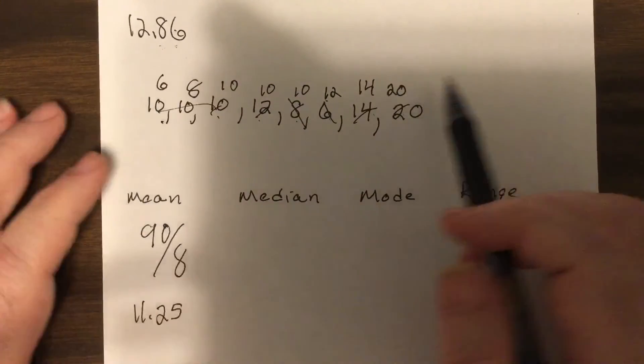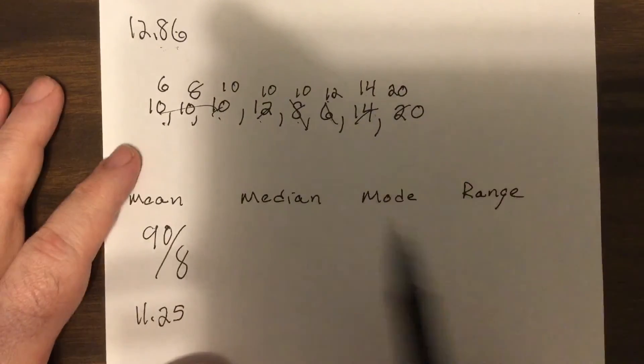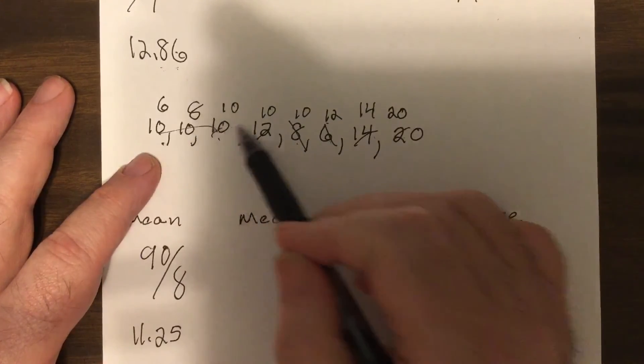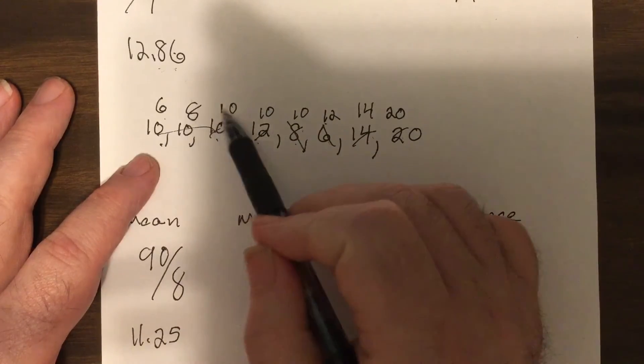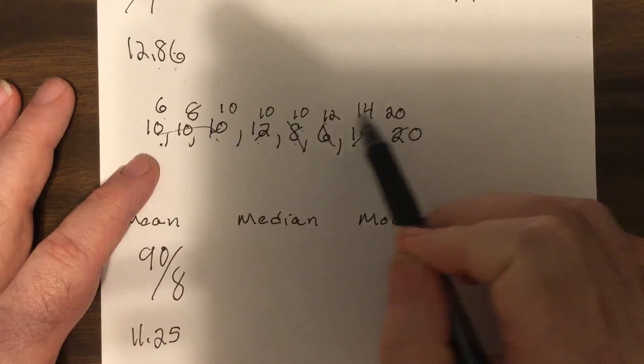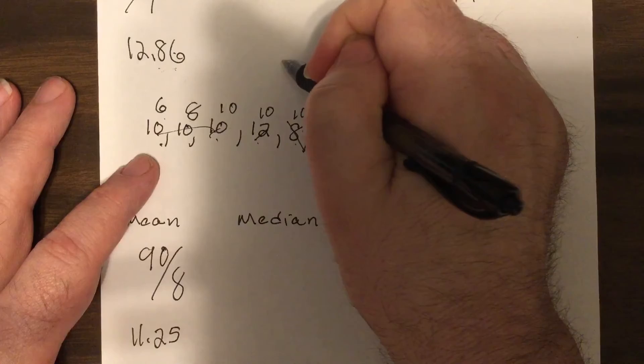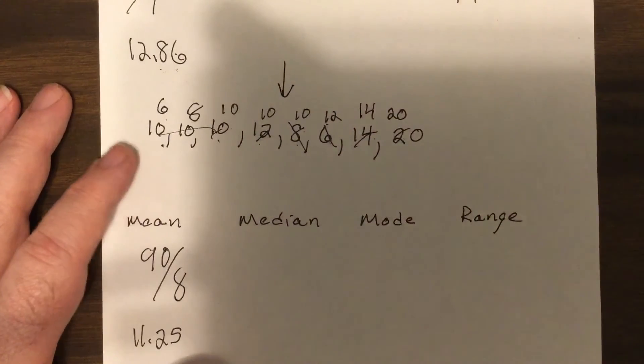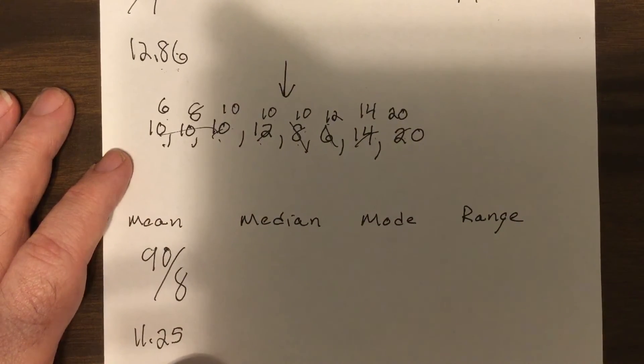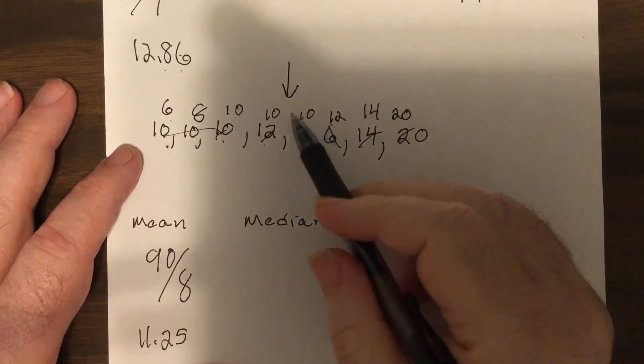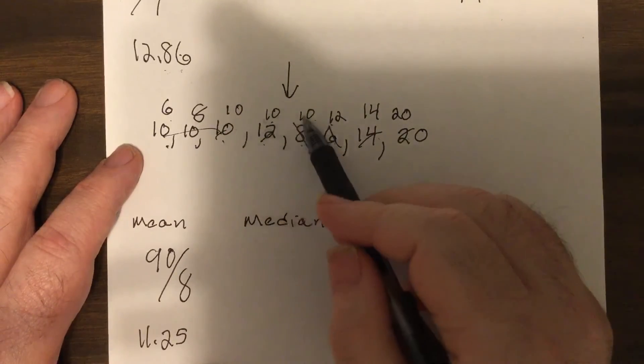So now they're listed in order, so 1, 2, 3, 4, 1, 2, 3, 4. So it's a number right between those two because there's not one number in the middle. So you'd add and divide by 2, but since these two are the same, it would just be that number, which is 10.